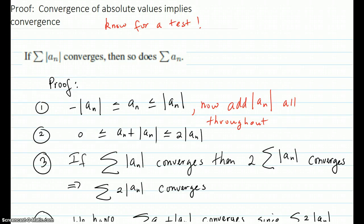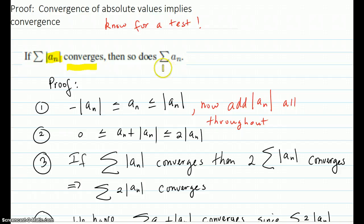Here's the proof that convergence of absolute values implies convergence. The idea is: if the series with absolute values on all the terms converges, then so does the original series without the absolute values. In other words, the absolute values are at least as big as all your a_n values, so if that converges, then so does a_n.